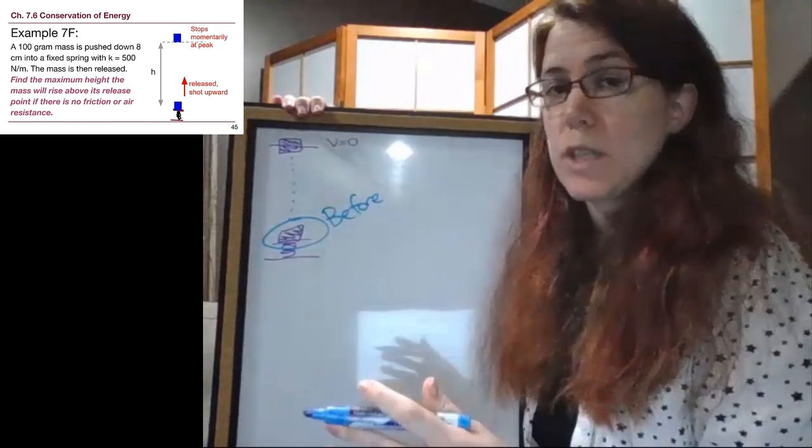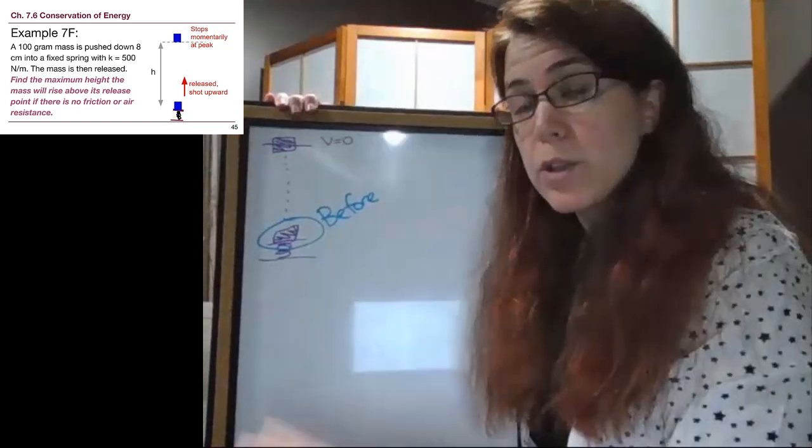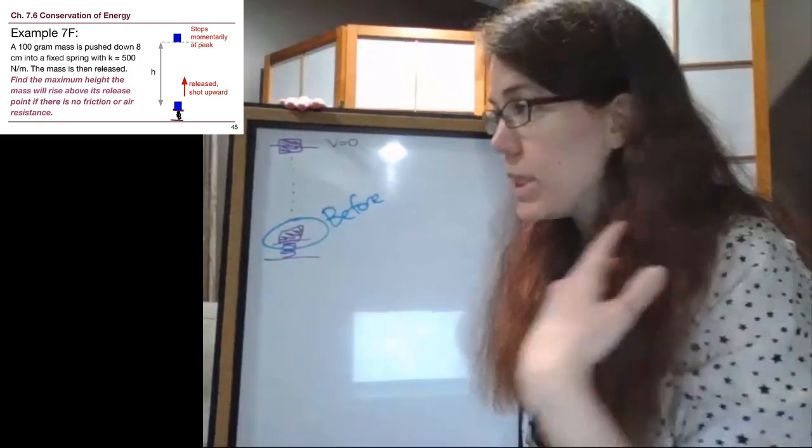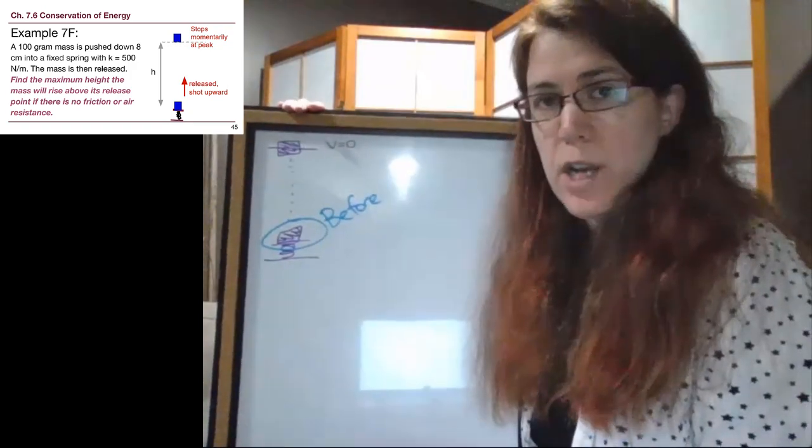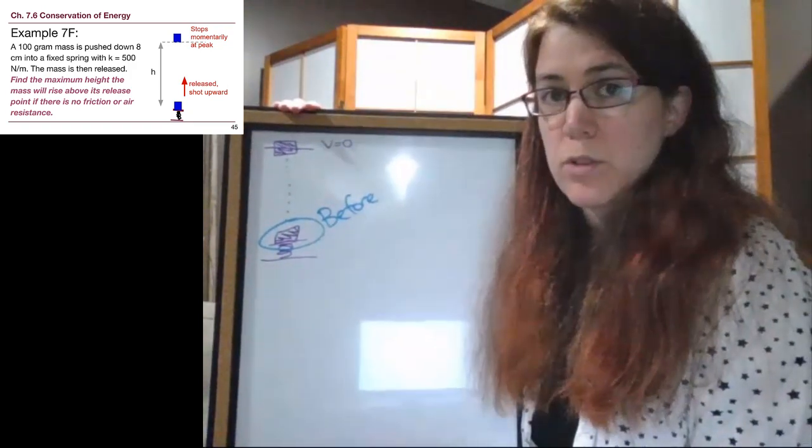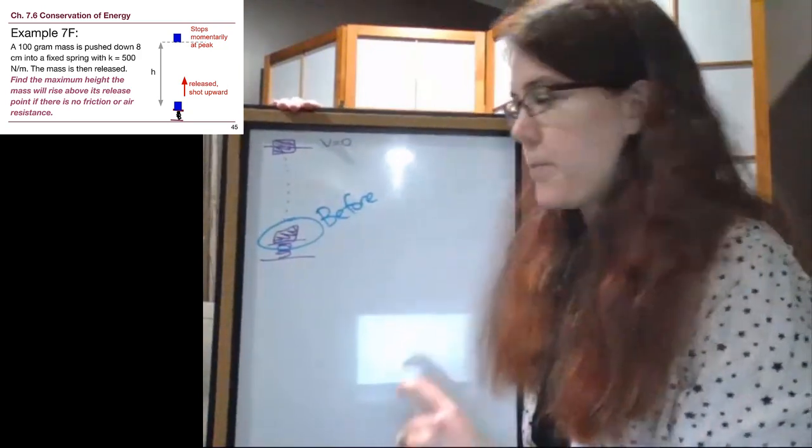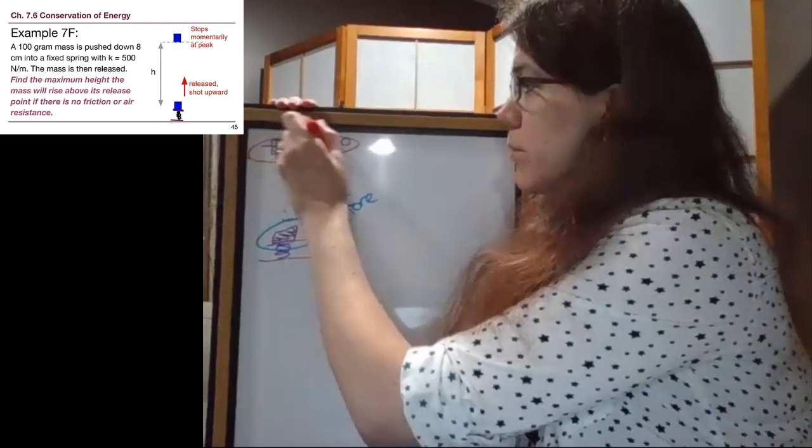This is one thing that a lot of students get confused about. But we already pushed ourselves into the spring before our energy problem started. Somebody added energy to the system that is not easily trackable by our physics 125 tools. And so our problem starts when the spring is already compressed. And then the after situation is up here at that maximum height.